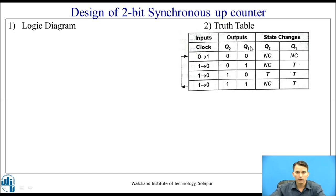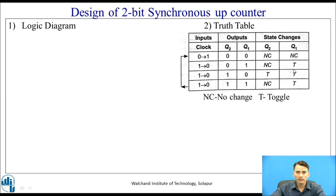From this truth table you can observe that Q1 output makes the transition always. But the output Q2, that is the second flip-flop's output, makes changes only when the output of Q1 is 1, then it will make the transition from 0 to 1. The cycle repeats, and in the last column you can observe that state changes are represented by NC which means no change, and T means toggle.